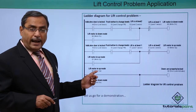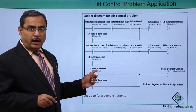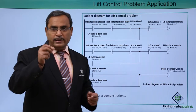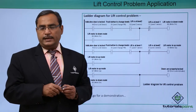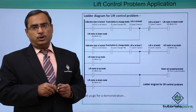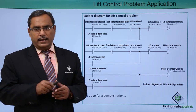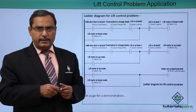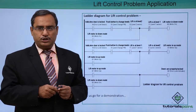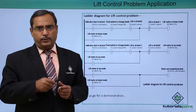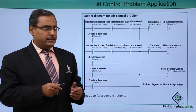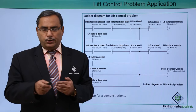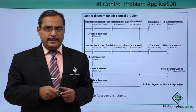For the upward direction rung: when the door lock sensor is sensed, the level changer push button is pressed, and the lift is at level one — the motor up stays on until the lift reaches level two, with the same latch logic applied. When the lift is moving in either direction, the door lock indicator lamp (Q3) remains on, indicating the lift is in motion. You can pause the video, draw the ladder diagram yourself, and try the simulation.